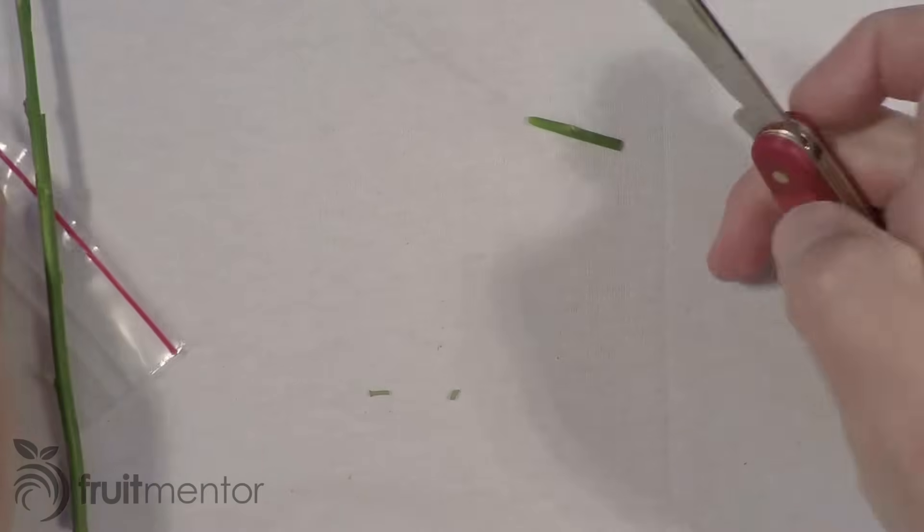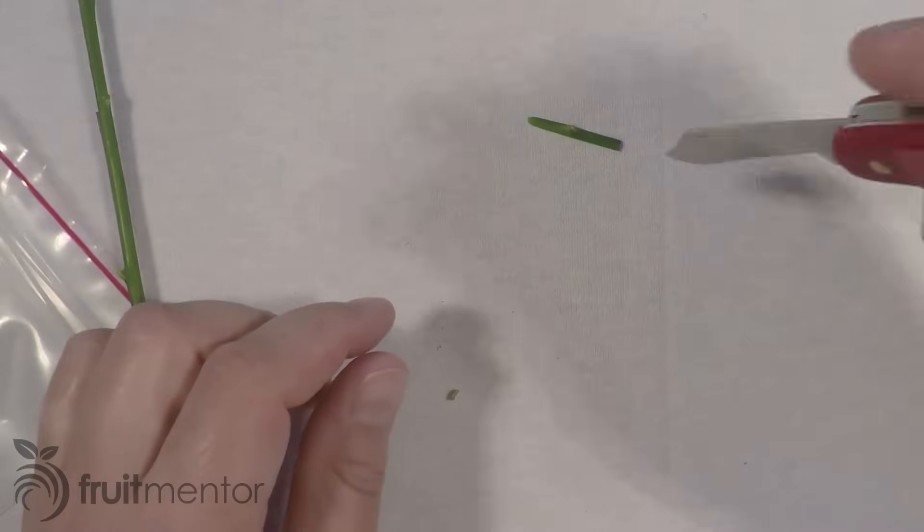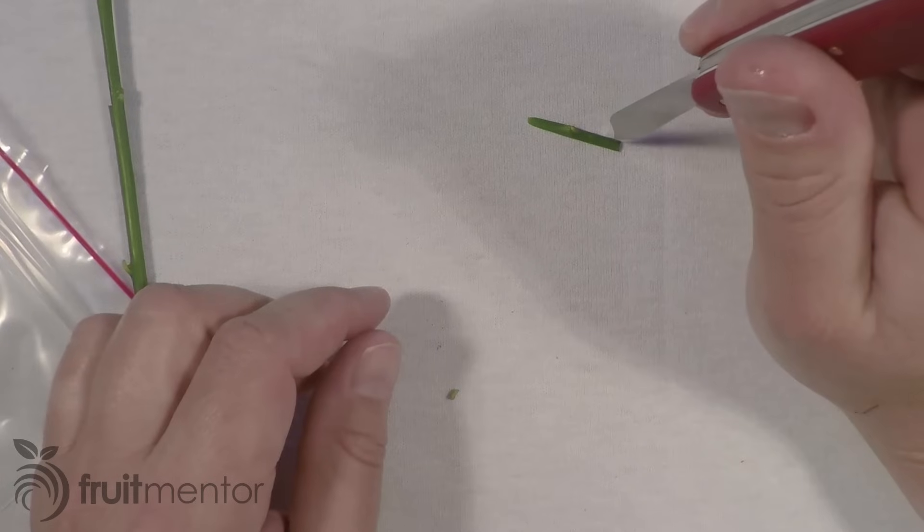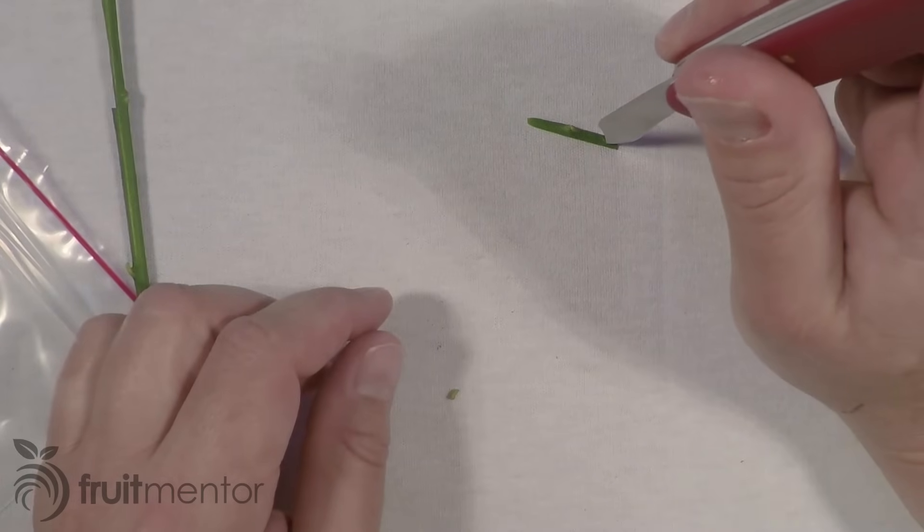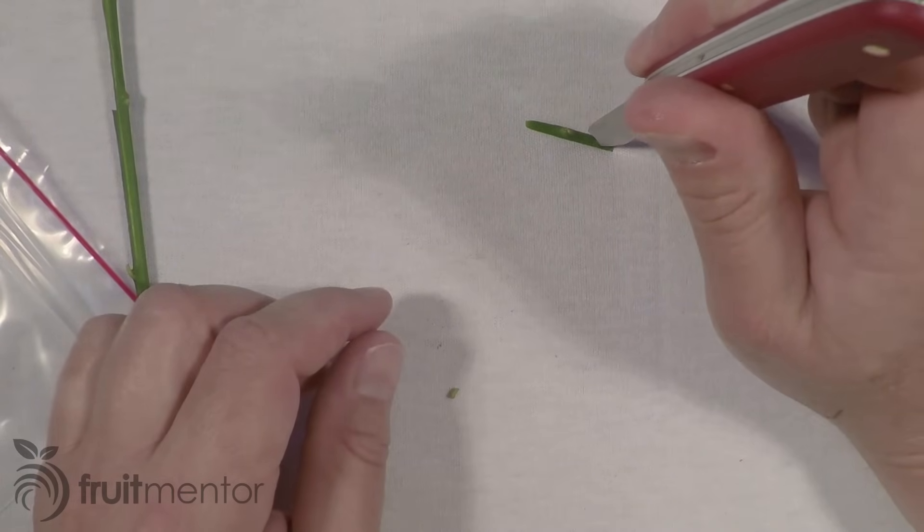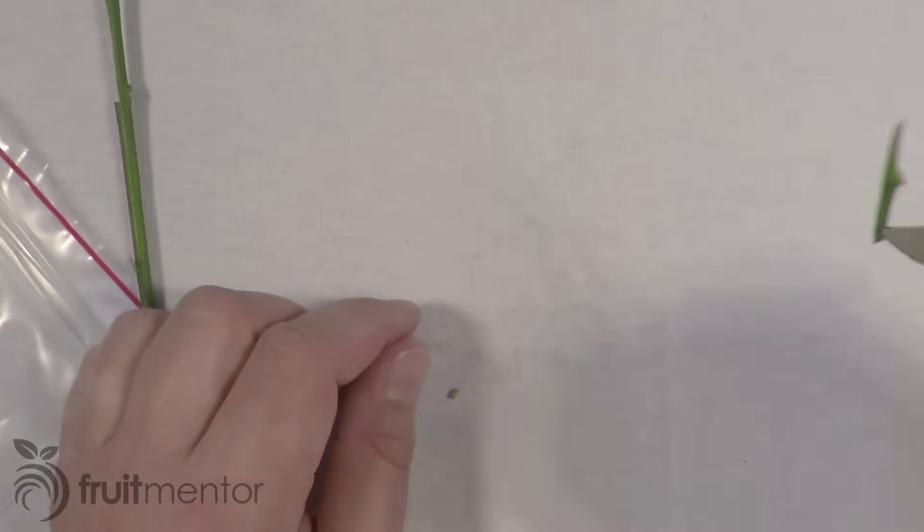It is important to avoid touching the cut surfaces of the bud. It is often possible to hold the bud by the petiole where the leaf was attached. Since the petiole has fallen off, I pick up the bud with my knife.